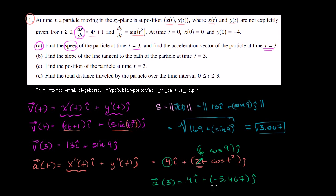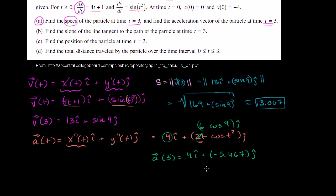I wrote it in engineering notation, which I'm sure the Advanced Placement exam people wouldn't mind. But you could also write it in your parametrized vector notation, or ordered pair notation as a vector. You could say that the acceleration vector at time 3 is the vector 4, negative 5.467. These are really specifying the same thing: 4 is the x component of the vector, and negative 5.467 is the y component of the vector.